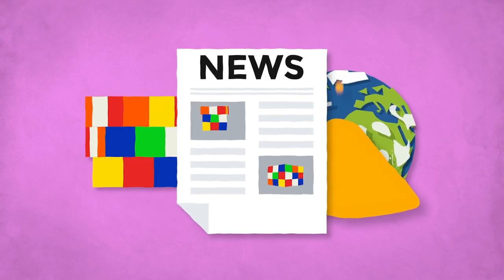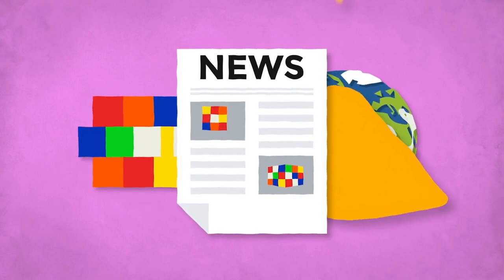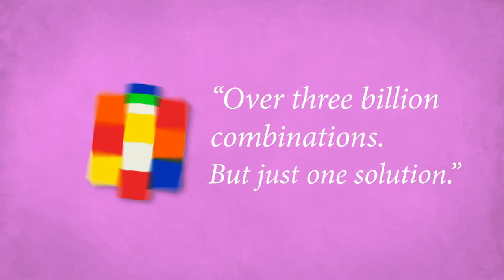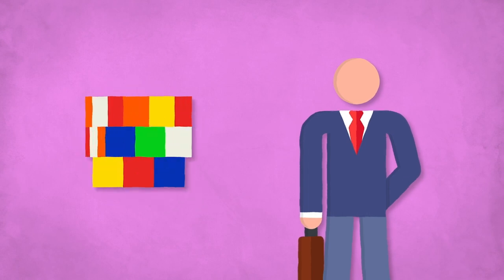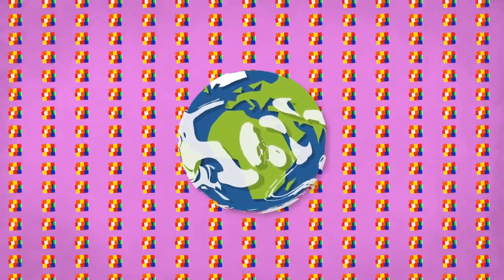But the New York Times really can't be blamed for making such an egregious error. That was the tagline. Rubik's Cube, over 3 billion combinations, but just one solution. Apparently, the ad execs didn't think 43 quintillion was as catchy.